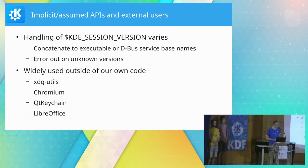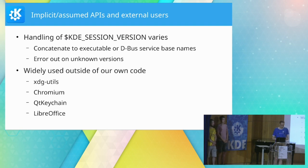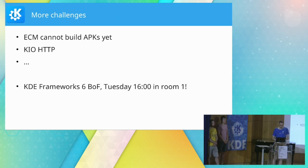An interesting example is how the KDE session version variable is interpreted. Some users just concatenate it onto DBus names or executable names and assume the same thing will exist with version 6 as well; others just error out. This happens in niche applications like Chromium or LibreOffice, or things like xdg-utils which handle opening files and URLs across the entire Linux platform. There are also libraries we use like QtKeychain. We need to identify all of those things in external consumers and see if we can make the new API match their expectations or fix things upstream in time for the KF6 release. This is probably the only really hard blocker.